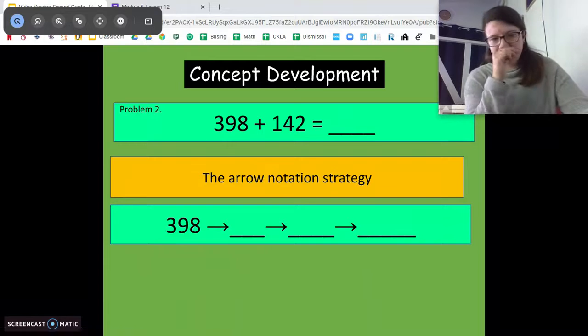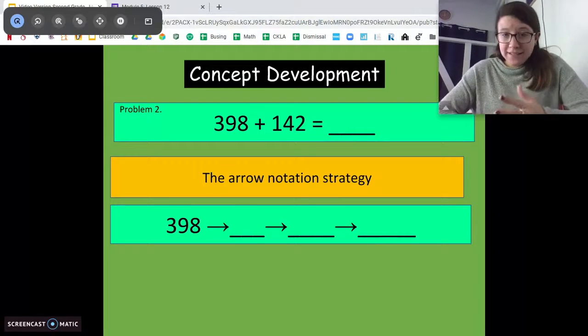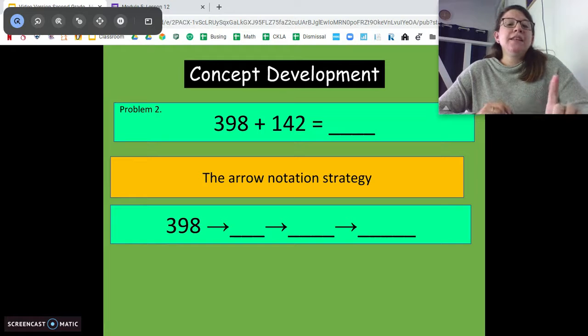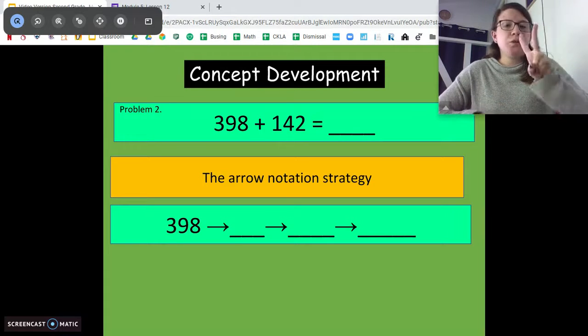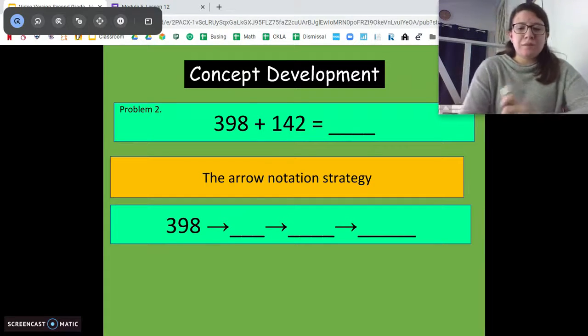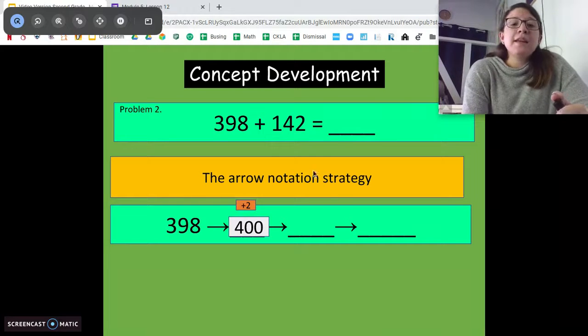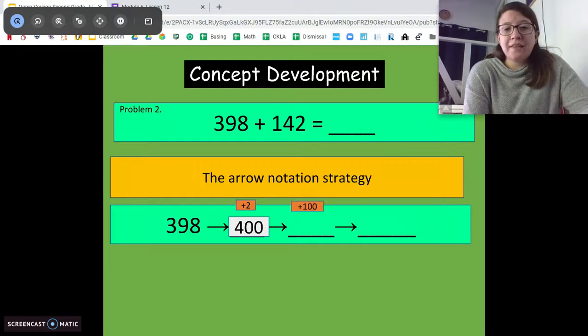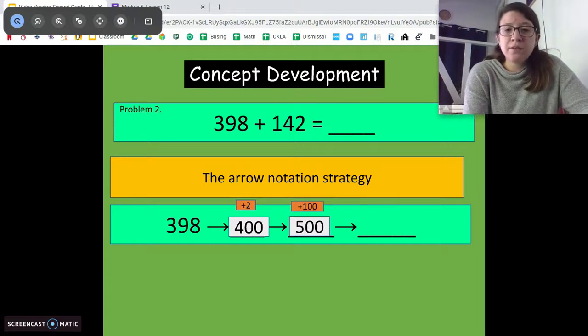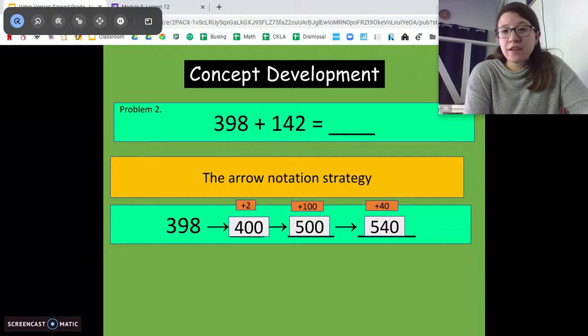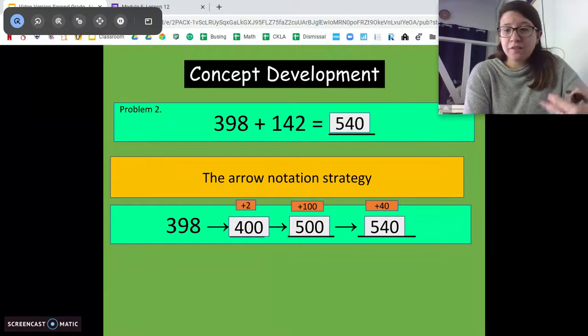Let's try another way. We could do the arrow way. So looking at this problem, I see that 398 is 2 away from its next 100. So I'm going to add that 2 in first. Get that 2 in easy 400. Now, I still have 140 to add. So I'm going to add that 100. Get to 500. Then I have that 40. And I get to 540. Another way to solve it. Same answer.